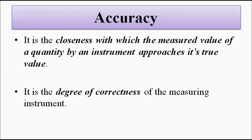It is not possible to achieve zero error — there will always be error. How close or how small the difference is between the measured value and the true value determines the quality of the instrument. The smaller the difference, the better the instrument. All we can do is try to minimize the difference between the measured value and true value. That is the main task of instrumentation, electrical, and electronics engineers when they design a measuring instrument or apparatus. Accuracy is the degree of correctness of the measuring instrument.